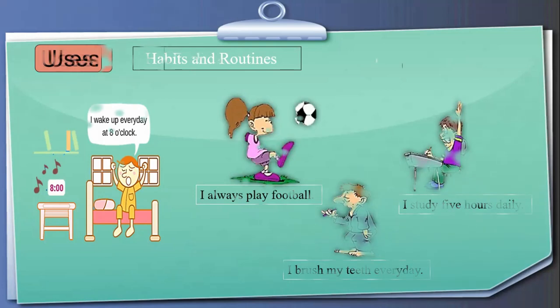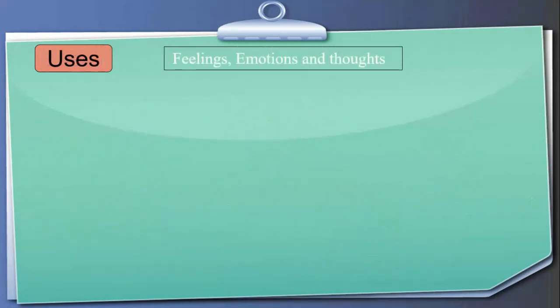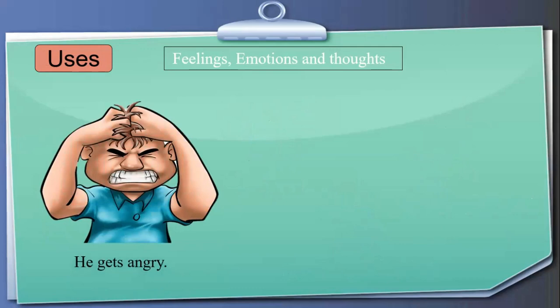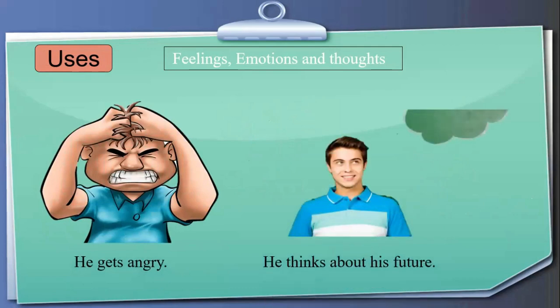Number three: present simple tense is used for feelings, emotions, and thoughts. For example, 'He gets angry' or 'He thinks about his future.' We use present simple tense when talking about what someone feels, thinks, or their emotions.